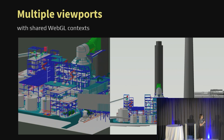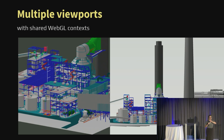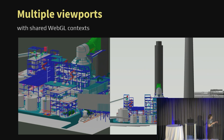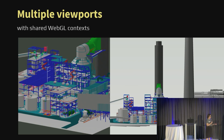Another thing we are working on — there is a PR open for this right now — is multiple viewports. CesiumJS already supports showing two viewers next to each other, but this would be multiple viewports sharing a WebGL context, which means we will share memory and other resources across the same scene. Here's an early example with a 3D tile set loaded in two different views side by side. This is really useful for architectural views where you need fine detail on one side — say in 2D or orthographic — and your full-resolution perspective view on the other.